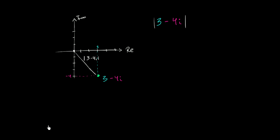So how can we think about that? Well, we could set up a right triangle and use the Pythagorean theorem. If we set up a right triangle, the height here—the distance between 0 and negative 4—is going to be 4. And then the base of this triangle, the distance between 0 and 3, is going to be 3.